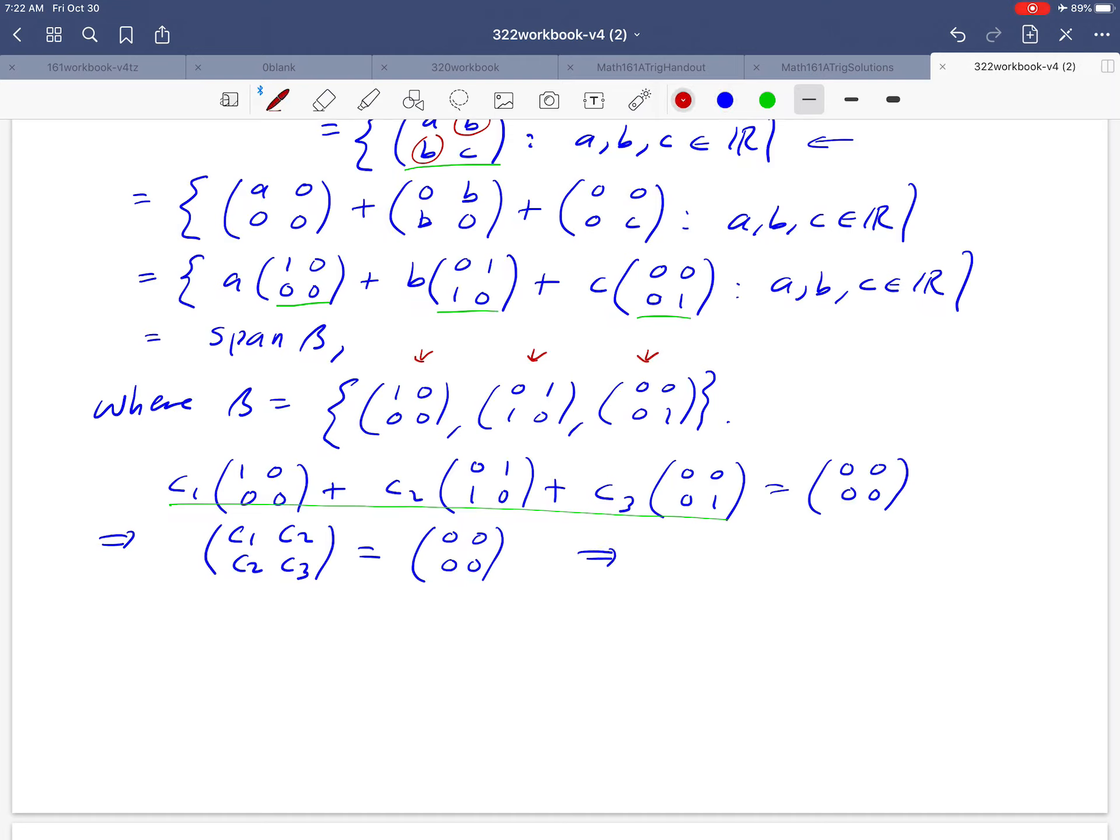But if that statement is true, then all of these entries that we have here have to be zero. Otherwise, we wouldn't have a true statement. And that tells us that C1, C2, and C3 are all equal to zero. So what we've demonstrated then is that this equation has only the trivial solution. What does that mean in terms of linear dependence and independence? Well, that means that the three matrices that we have are linearly independent. So since star has only the trivial solution, beta is linearly independent. I'm going to use the abbreviation LI for linearly independent. And we've just confirmed that beta is therefore a basis.